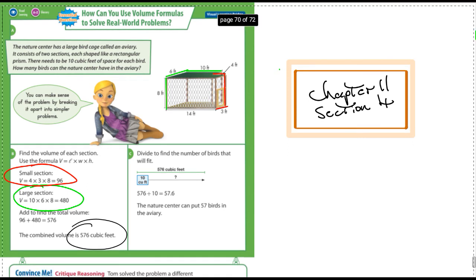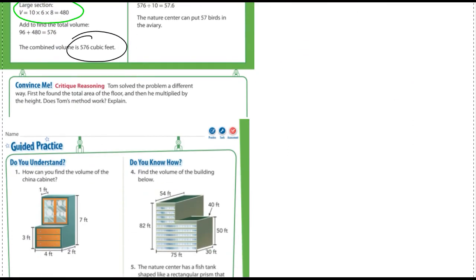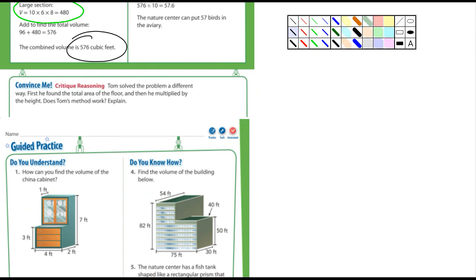Let's look at the Convince Me here. It says Tom solved the problem by a different way. First, he found the total area of the floor, and then he multiplied by the height. Does his method work?